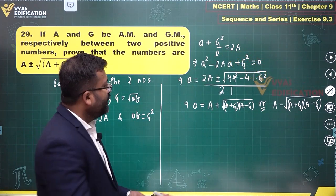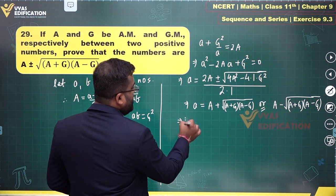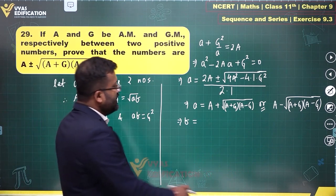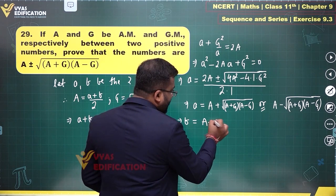If a is the first value, what will b equal? We observe b = 2A - a, so b = A - √((A+G)(A-G)), or